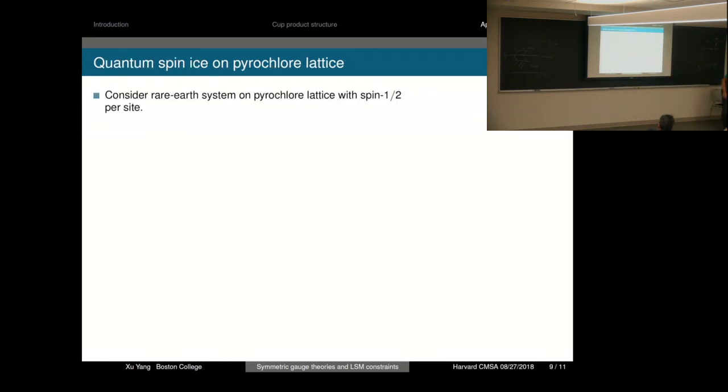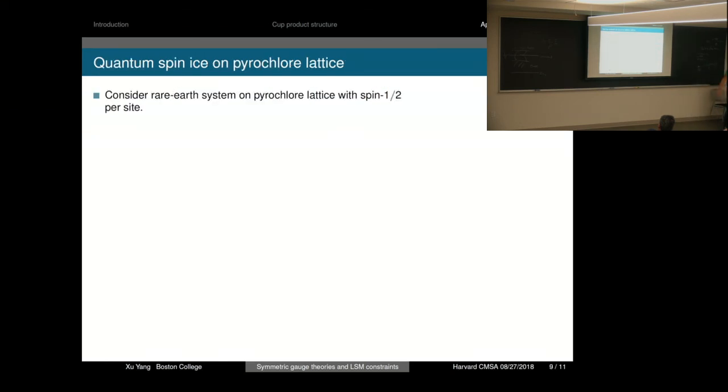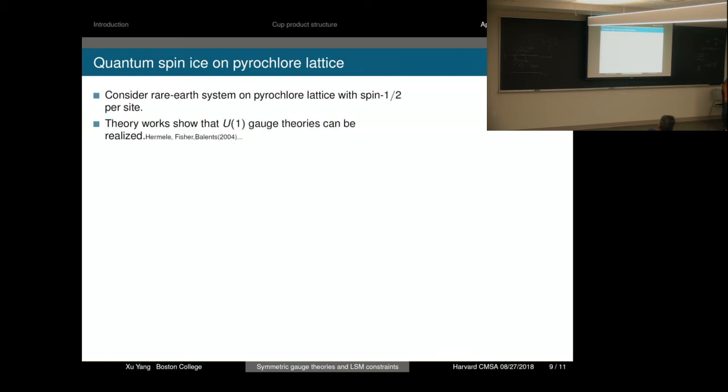Our second example is quantum spin ice on pyrochlore lattice. Previous work has shown that there is an LSM anomaly on this system. We only consider time-reversal symmetry and inversion symmetry for simplicity. In this case, the gauge charge E and monopole M have specific transformation laws under symmetries.